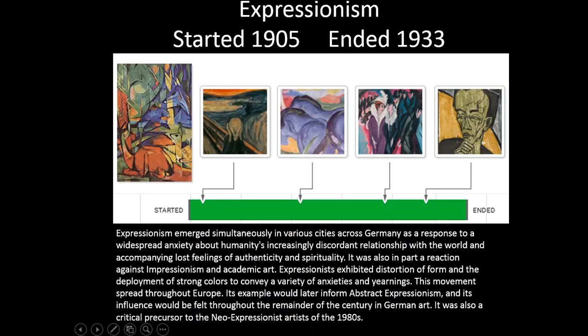Our next period of modernism is Expressionism, which started around 1905 and ended around 1933. Expressionism emerged simultaneously in various cities across Germany as a response to widespread anxiety about humanity's increasingly discordant relationship with the world and feelings of lost authenticity and spirituality. It was also a reaction against Impressionism and academic art. Expressionists exhibited distortion of form and strong colors to convey anxieties and yearnings, and would later inform Abstract Expressionism and Neo-Expressionism of the 1980s.